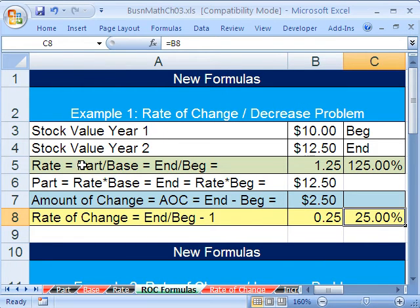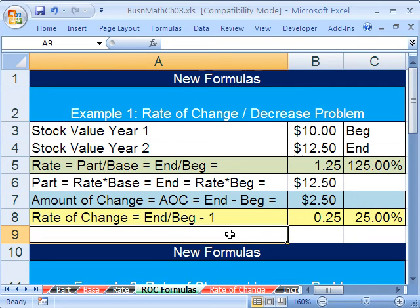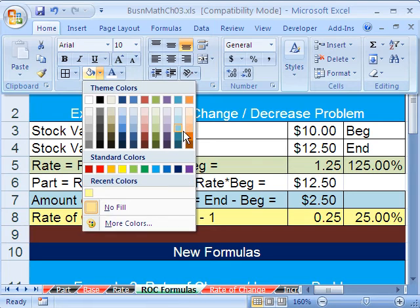Now, do you see a relationship between rate and rate of change? Well, look, End divided by Begin, minus 1. Oh, our formula was up here, was just End divided by Begin. No minus 1. So watch this, to get rate of change, anytime you know the rate up here, it's easy to get the rate of change. We'll do a second formula.